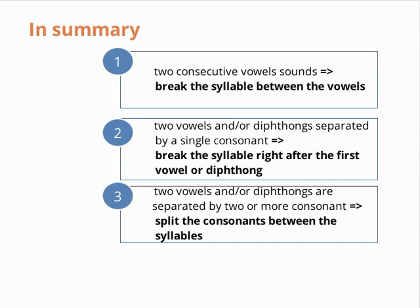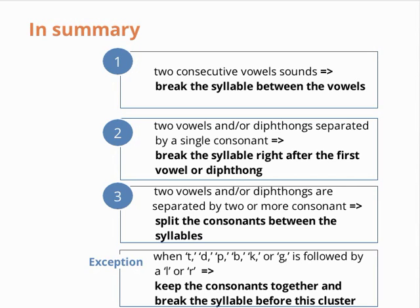Three, when two vowels and/or diphthongs are separated by two or more consonants, split the consonants between the two syllables. And four, as an exception to the previous rule, when T, D, P, B, K, or G is followed by an L or R, keep the consonants together and break the syllable before this cluster.